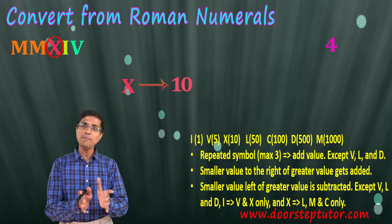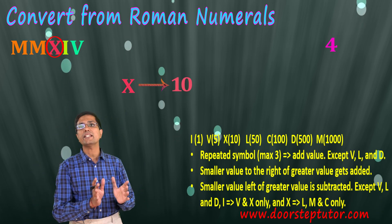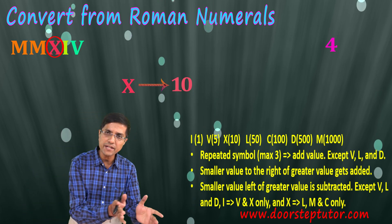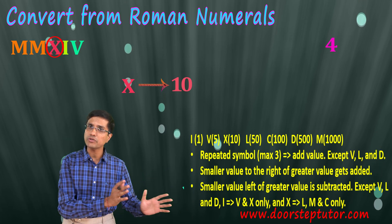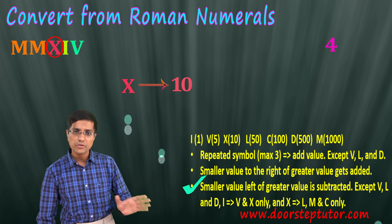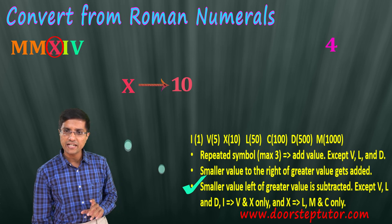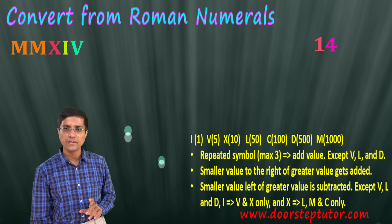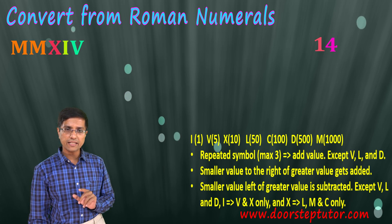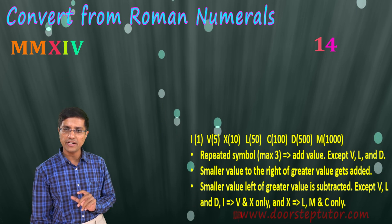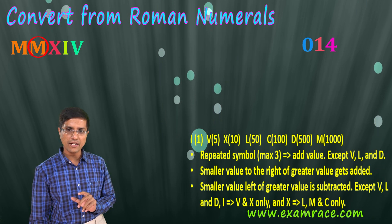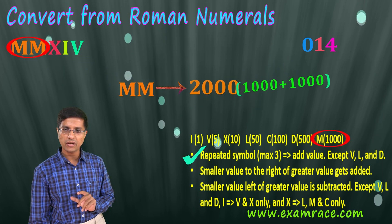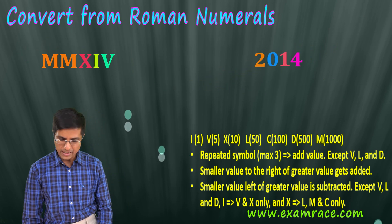Now we come to X, which is 10. Can we combine X with M? No, so we leave it as 10, giving us a tens digit of 1. There is no hundreds digit, so we write 0 there. The two M's stand for 2000, so the thousands digit is 2. Therefore MMXIV equals 2014.